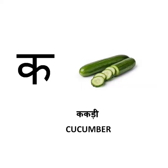Ka. Ka say kakdi. Kakdi means cucumber. It is a vegetable and it is green in color.